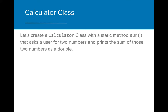As a quick warm-up, let's create a calculator class with the static method sum that asks a user for two numbers and prints the sum of those numbers as a double. Can you figure out the steps you need to take in order to complete this method? You can pause this video while you write down your answers.